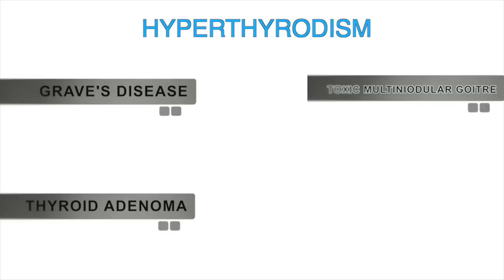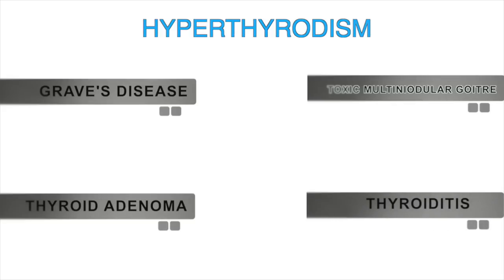Hyperthyroidism is also caused by thyroiditis, which is inflammation of the thyroid gland. When there is inflammation, there is increased production of T3 and T4 hormones. It must be noted that there is another condition, Hashimoto's thyroiditis, which actually leads to hypothyroidism.